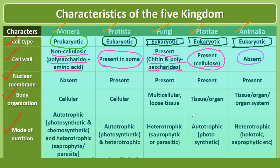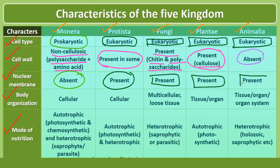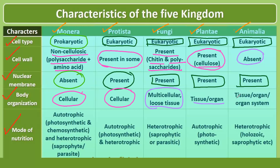Regarding nuclear membrane: as Monera are prokaryotic, nuclear membrane is absent. All other kingdoms are eukaryotic and therefore have a nuclear membrane. For body organization: Monera and Protista are unicellular and show cellular organization. Fungi are multicellular with a loose tissue-type organization. Plantae show tissue and organ-level organization, and Animalia have tissue, organ, and organ-system level organization.